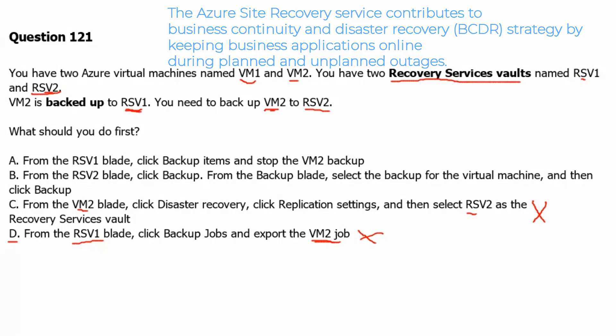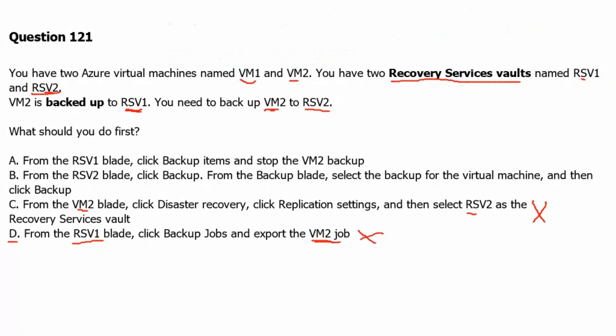Option B: From the RSV2 blade, click backup. From the backup blade, select backup for virtual machine and then click backup. This is not the first step — we first need to stop the backup which is happening on RSV1. Therefore this is the wrong answer.